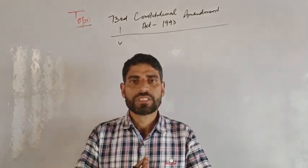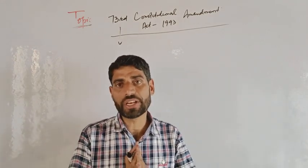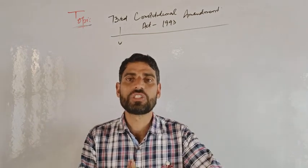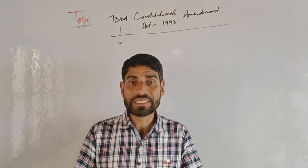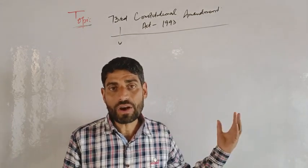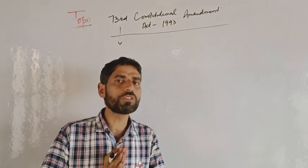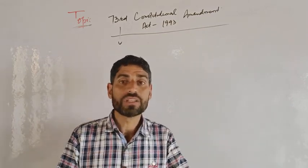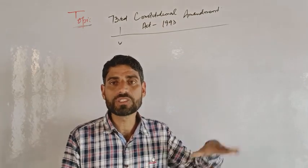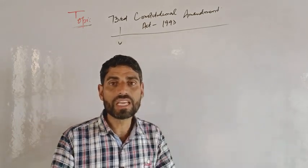Today our topic for discussion is the 73rd Constitutional Amendment Act of 1993. The Panchayati Raj system in India is known as local self-government or democracy at the grassroot level. Article 40 of the Indian Constitution directs states to organize village panchayats as units of local self-government. In the original constitution, there was no mention of the Panchayati Raj system — it was not a constitutional body.